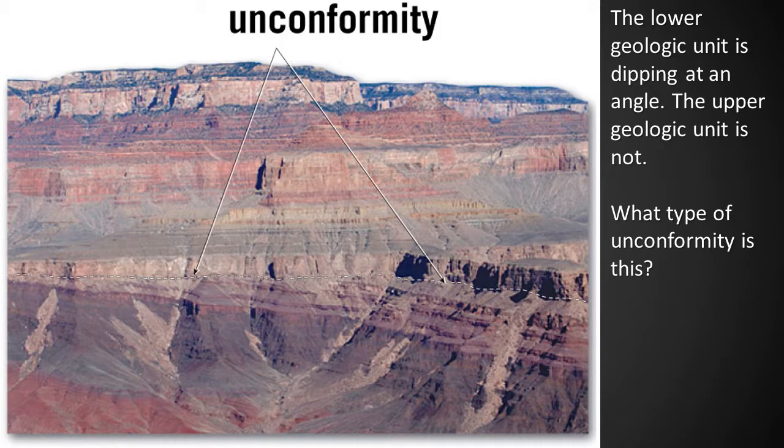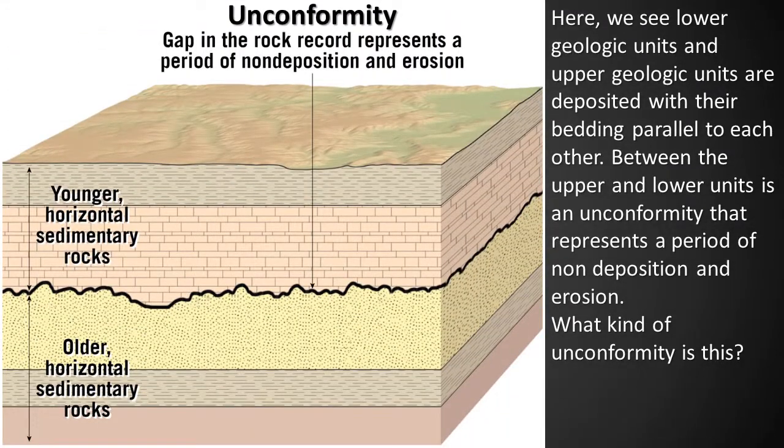Here, the lower geologic unit is dipping at an angle and the upper geologic unit is not — this is another example of an angular unconformity. In a different example, we see lower and upper geologic units deposited with their bedding parallel to each other, with an unconformity between them representing a period of non-deposition and erosion. This is an example of a disconformity.